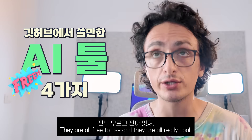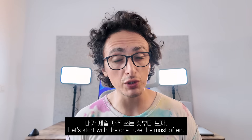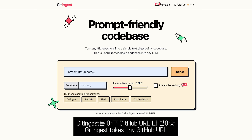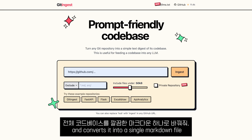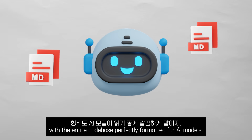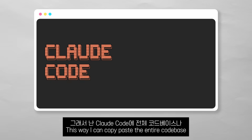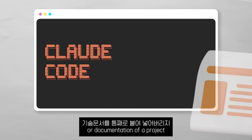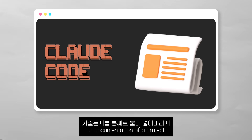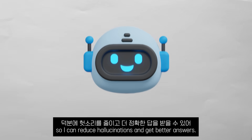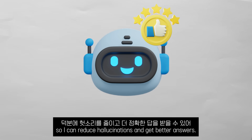They are all free to use, and they are all very, very cool. Let's start with the one I use the most often. Git Ingest takes any GitHub URL and converts it into a single Markdown file, with the entire codebase perfectly formatted for AI models. This way, I can copy-paste the entire codebase or documentation of a project into a conversation with Claude Code, to reduce hallucinations and get better answers.